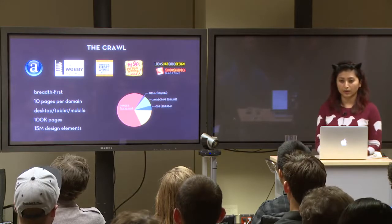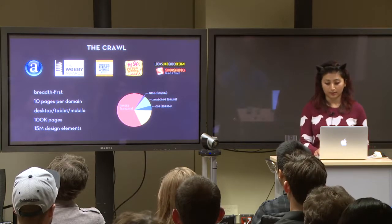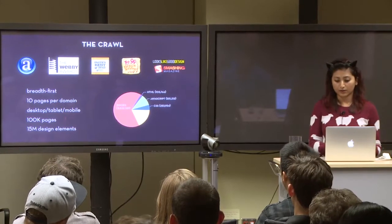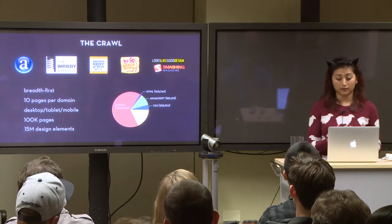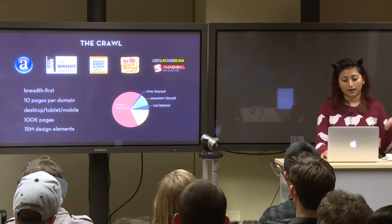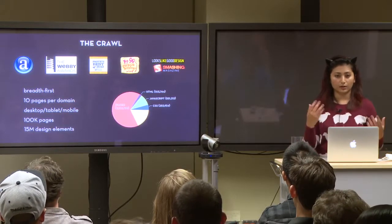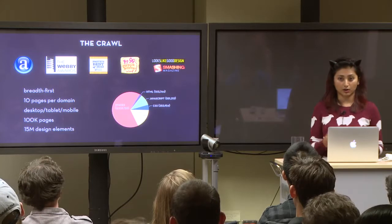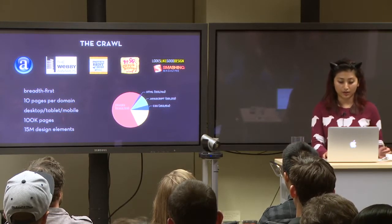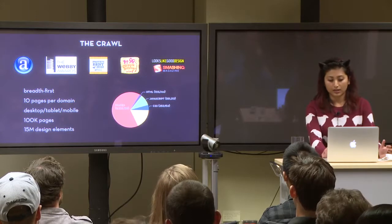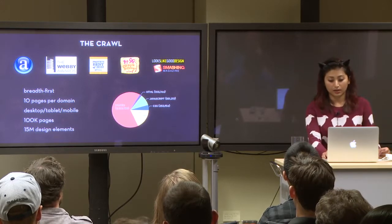The Web Zeitgeist crawl was seeded with pages from the Alexa Top 500, the Web E Awards Gallery, and other popular design blogs. We crawled pages in breadth-first order and limited downloads to 10 pages per domain to ensure a diverse repository. We also spoofed HTTP headers and requested both mobile and tablet versions of pages so that eventually we can understand how designs change across form factors. Currently, the Web Zeitgeist dataset consists of around 100,000 web pages, corresponding to about 150 million individual DOM nodes or about 15 million visual design elements.